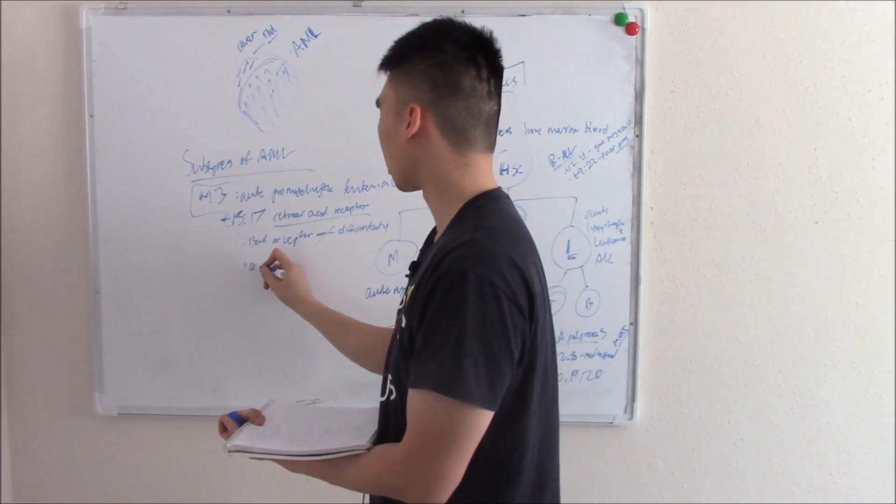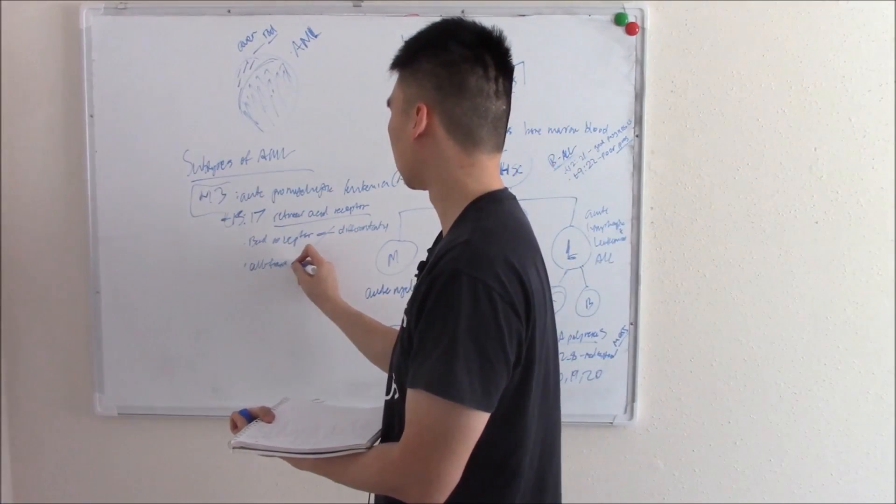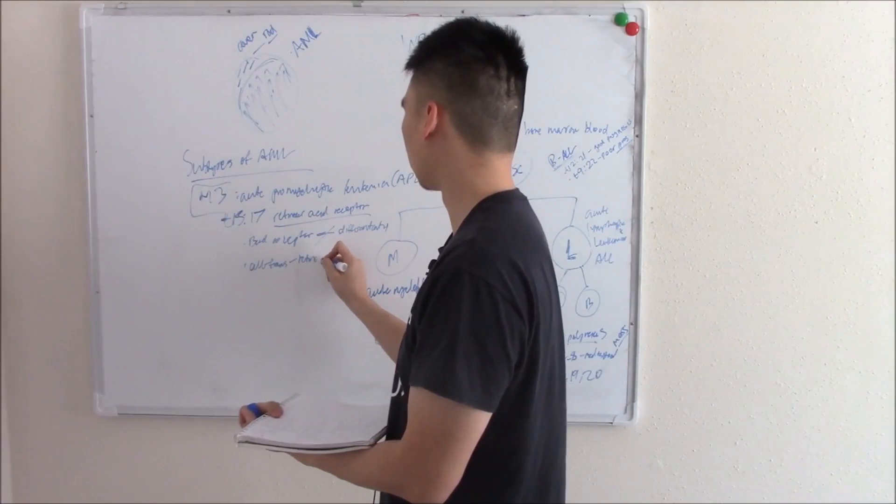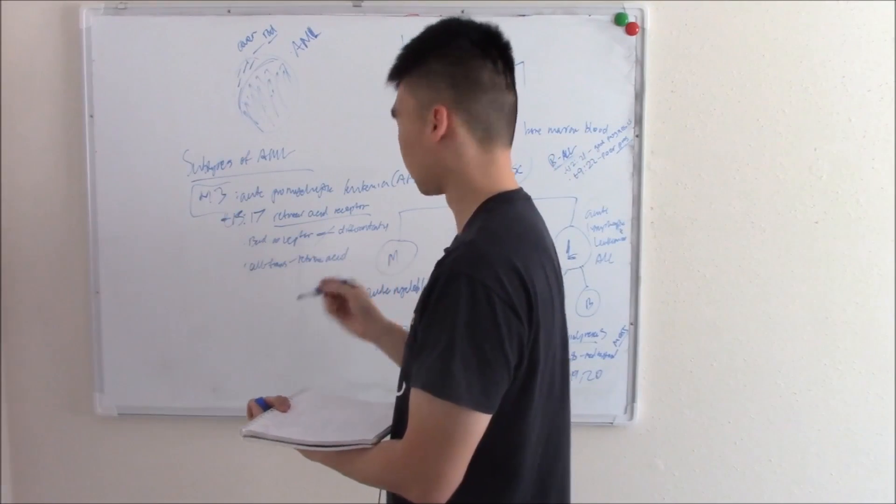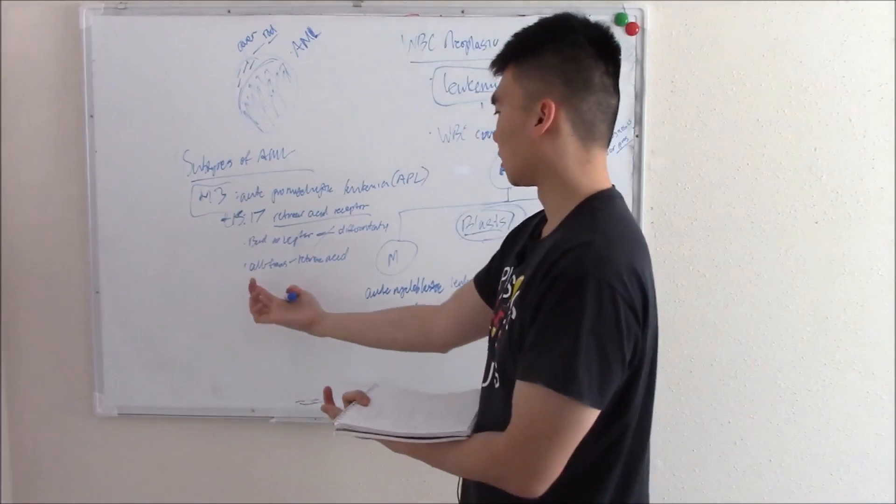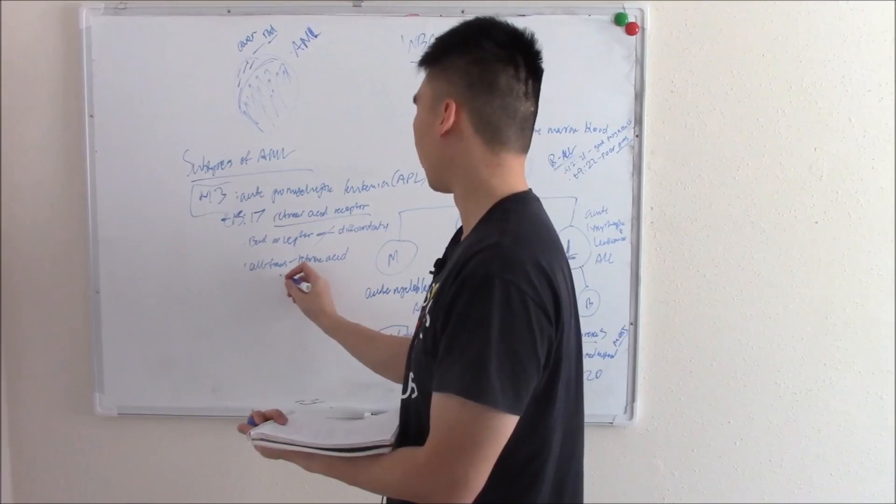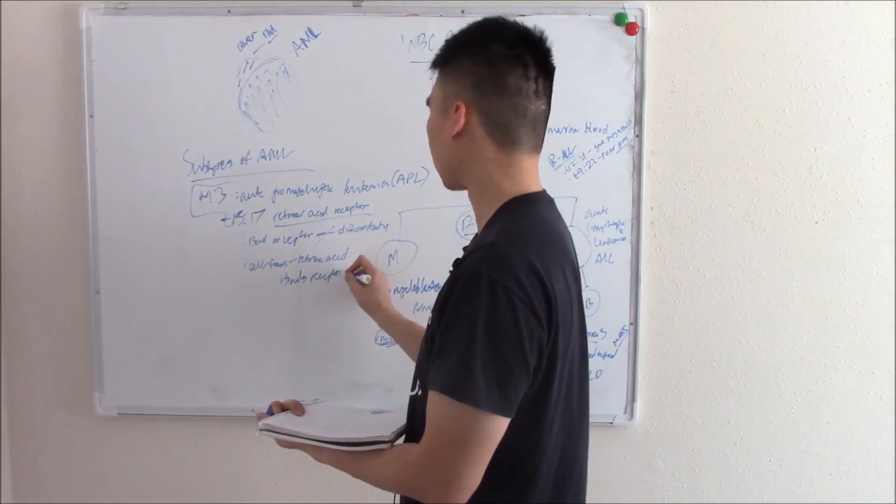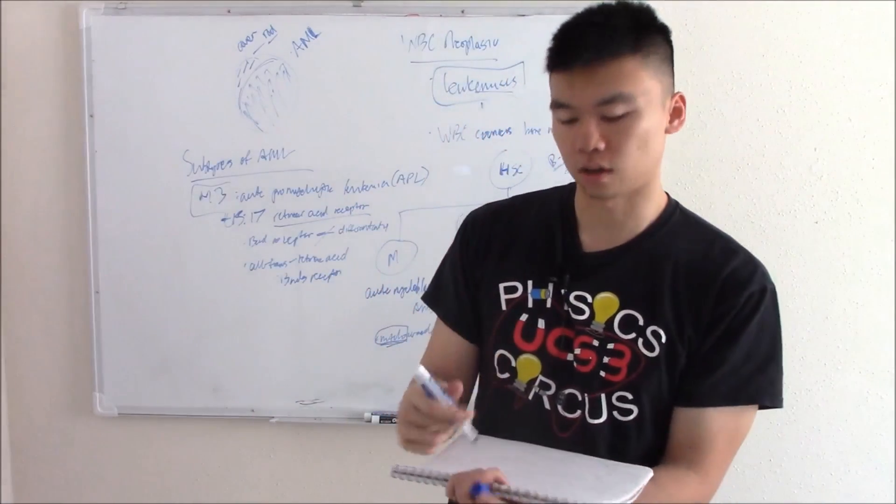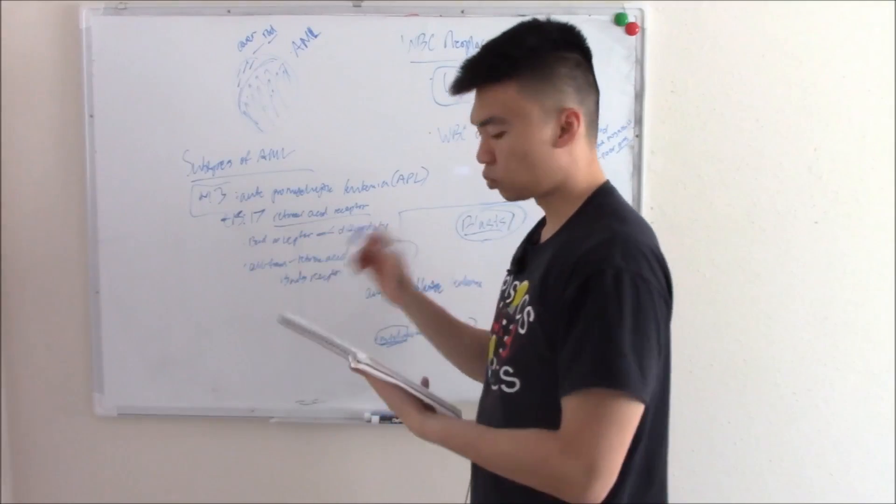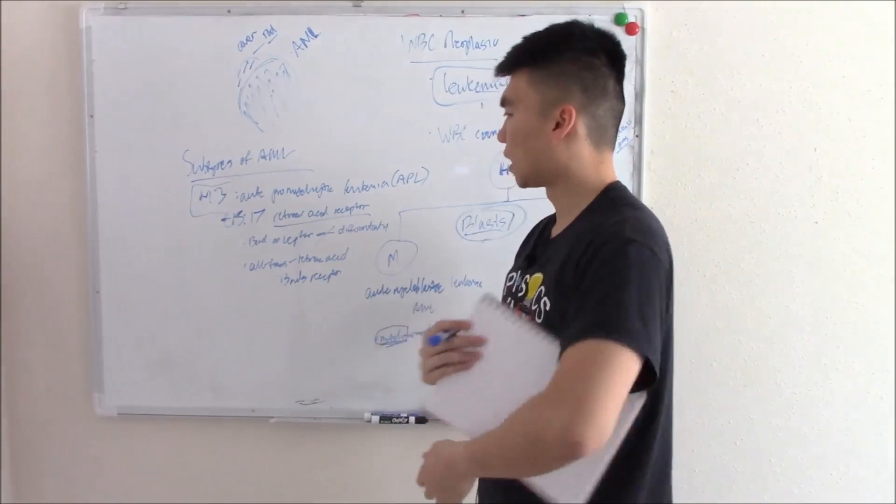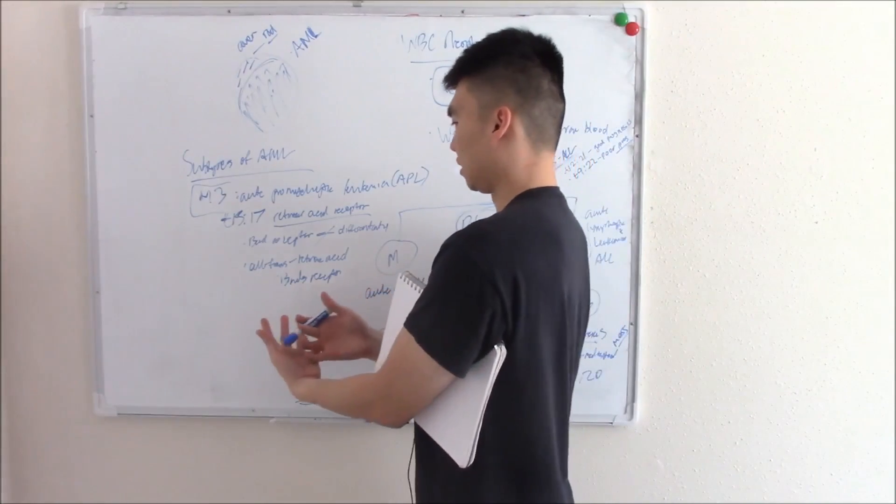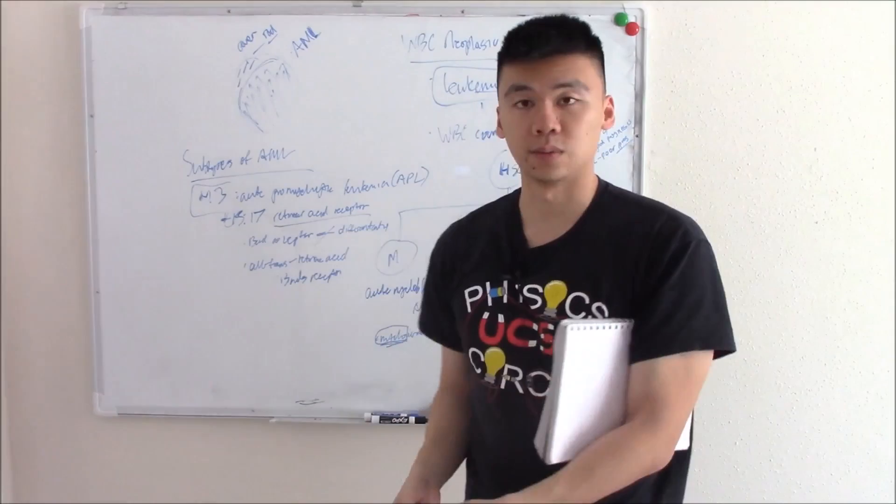How do we fix this? We give something called all-trans-retinoic acid. That's essentially a type of vitamin A. It binds the receptor, activates it, and then you mature the cells. Very important because you can basically cure a cancer with vitamin A.